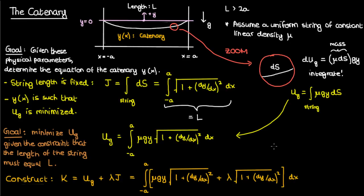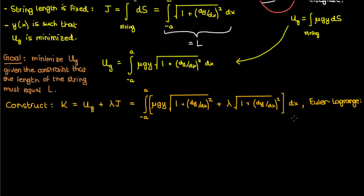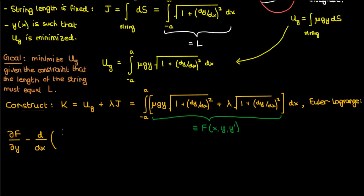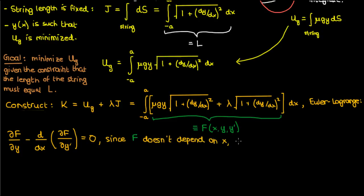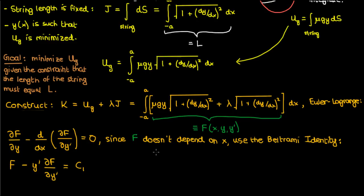The next step is to take this constructed functional K and directly apply the Euler-Lagrange equation to it. If I denote the expression inside the integral as capital F of x, y, and y', then the Euler-Lagrange equation says the partial of F with respect to y minus the derivative with respect to x of the partial of F with respect to y' equals 0. However, F doesn't explicitly depend on x, so we can use the Beltrami identity — a simplified variant — according to which F minus y' times the partial of F with respect to y' equals a constant C1.